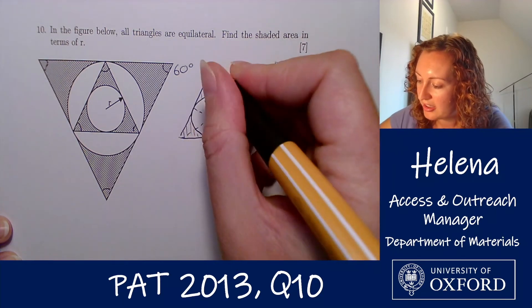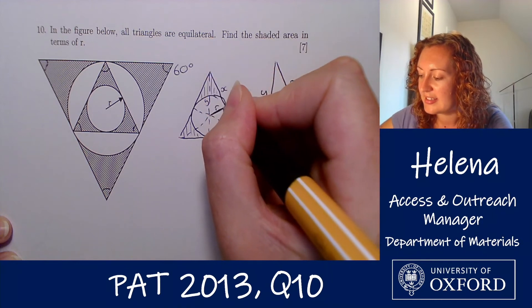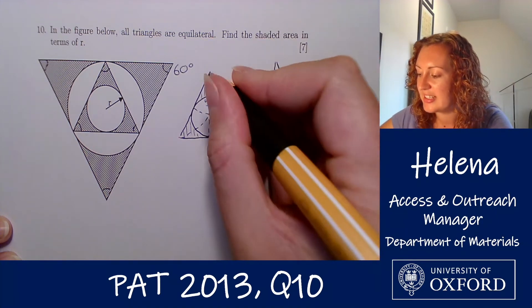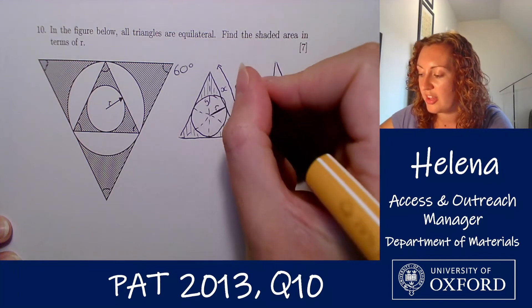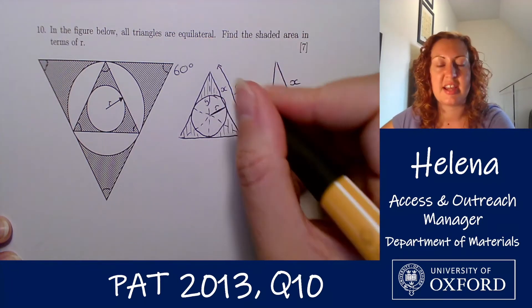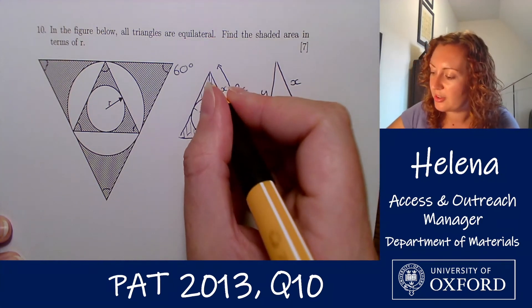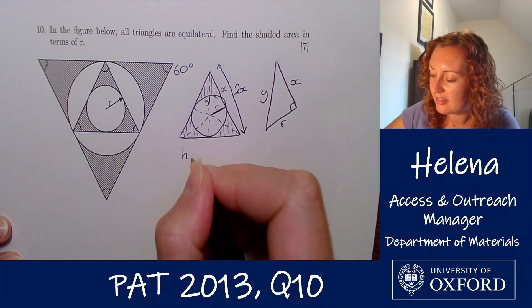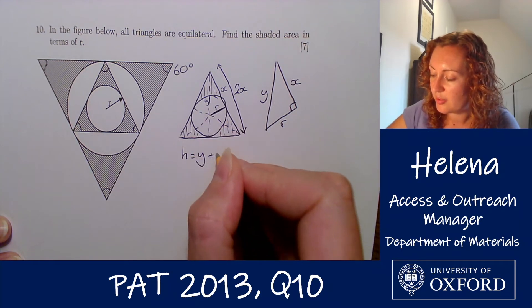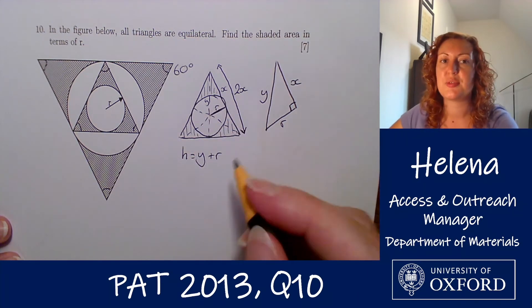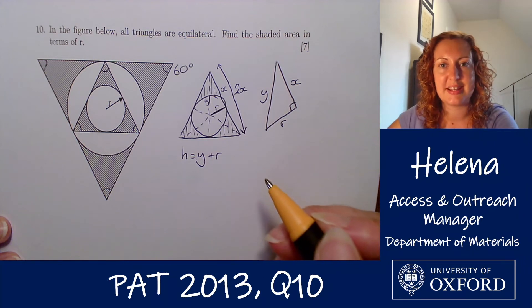On this diagram, this length here is y and this length here is x, and we can see that x is half of the full length of the side — so the length of the side is 2x. We can also see that the height is this length y plus the radius of the smaller circle. So if we can find x and y, we can find our base and height measurements.